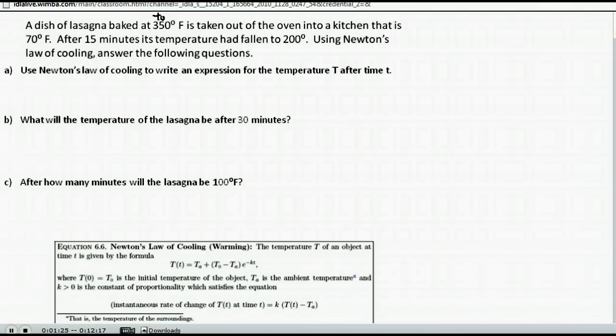It's taken out of the oven into a kitchen that is 70 degrees Fahrenheit. It enters the kitchen. That's its new environment. So that's our T_A. After 15 minutes, here's our time. Its temperature has fallen to 200 degrees. So in this case, they've given us pretty much everything except for our rate of cooling. This 200 degrees is our T(t), or the temperature after 15 minutes. Using Newton's law of cooling, let's answer some of these questions.